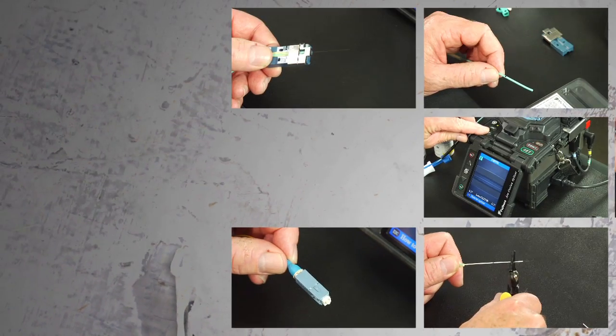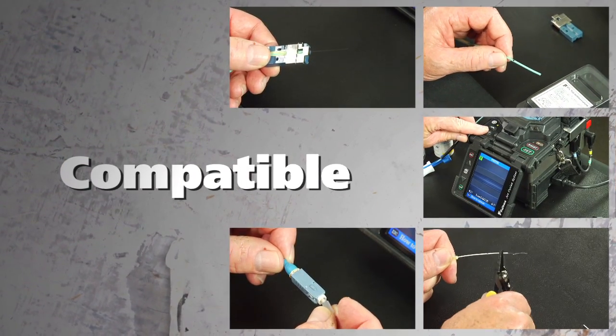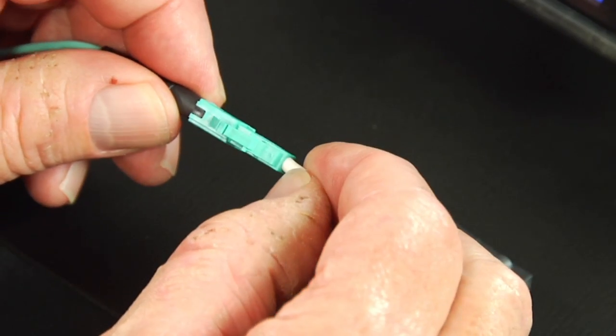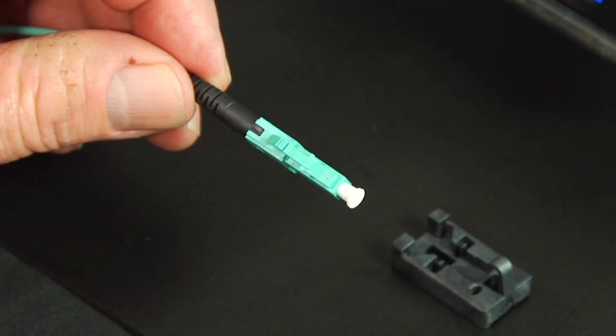Fuse Connect is compatible with most of Fujikura's fiber holder fusion splicers. This video will guide the user through the steps required to properly terminate the Fuse Connect LC connectors.